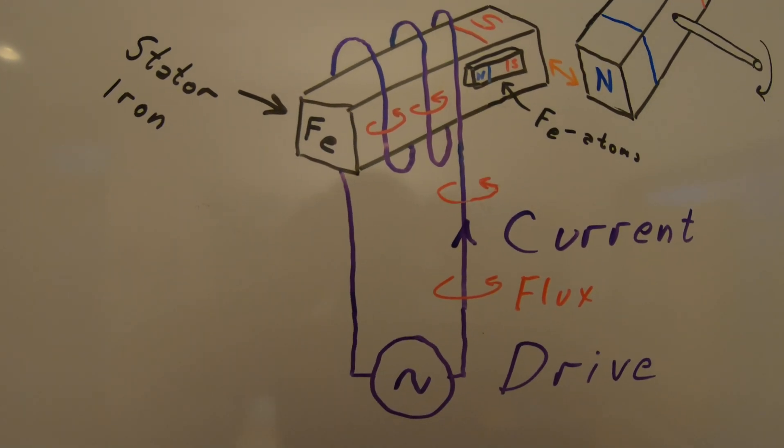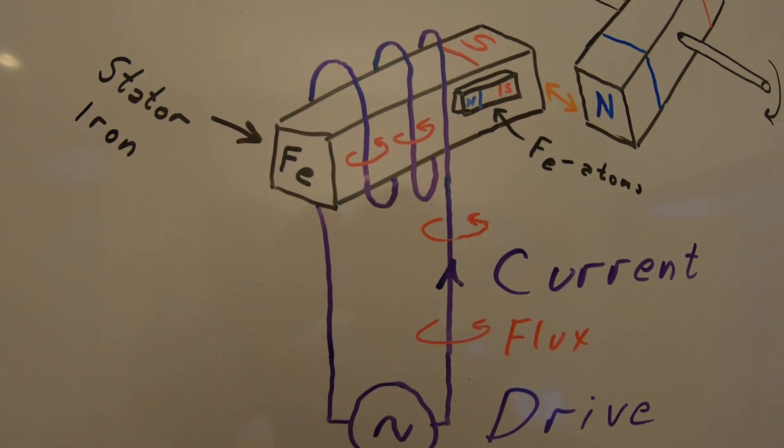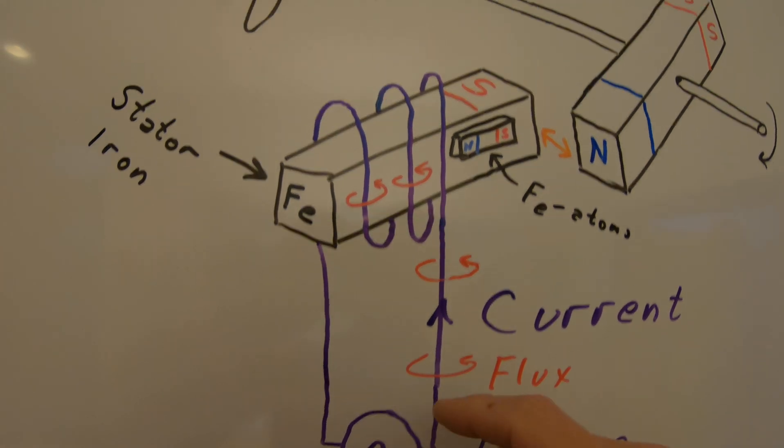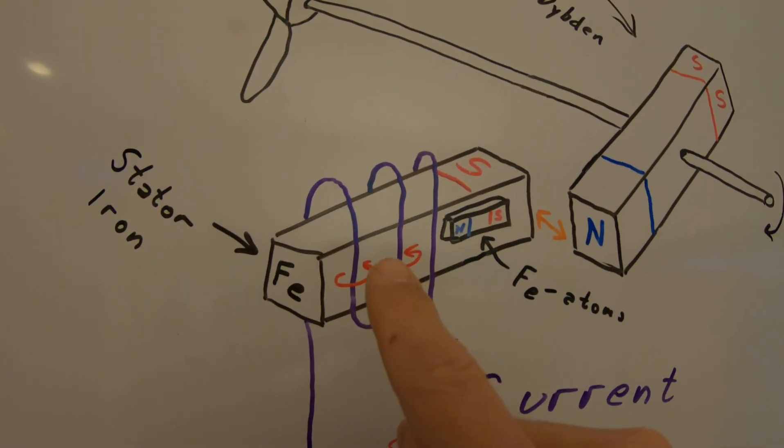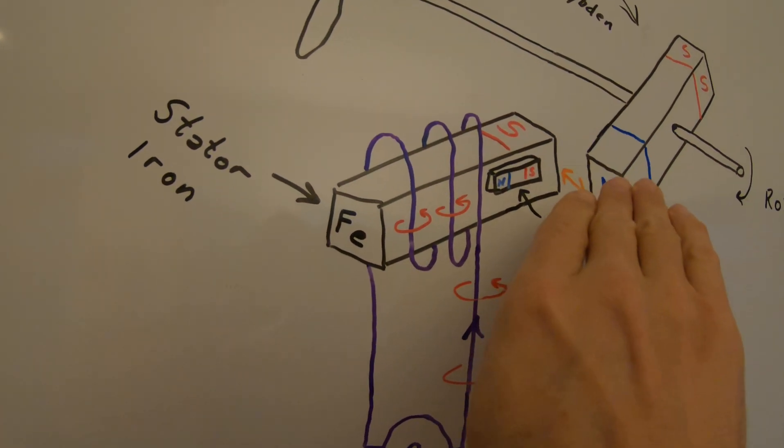We know from physics that when a current goes through an electrical wire then there will be a magnetic field around the wire. This magnetic field will push the iron atoms into pointing into one direction.